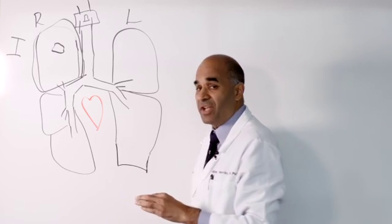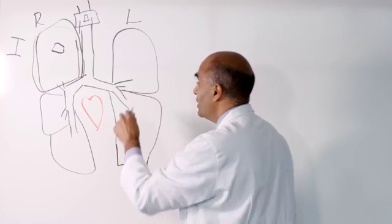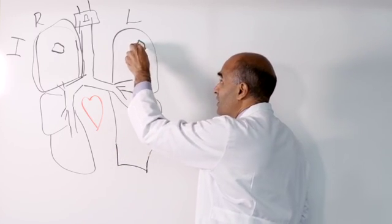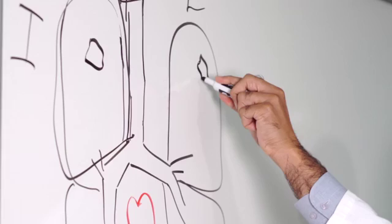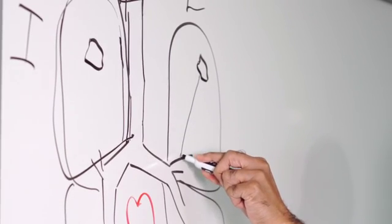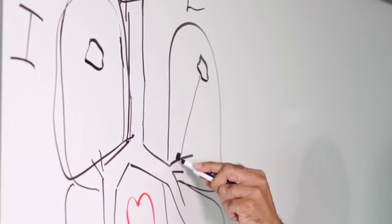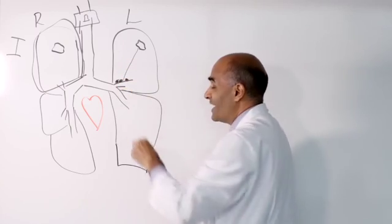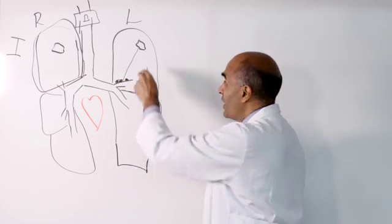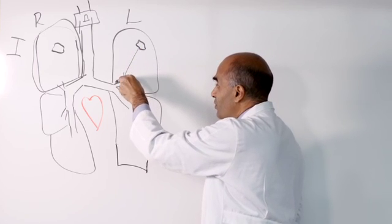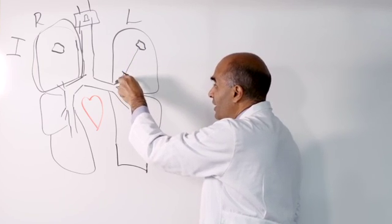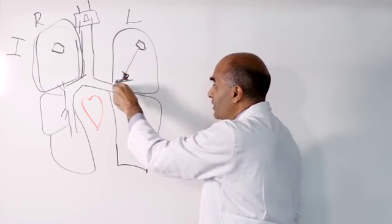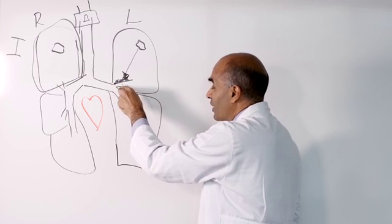Now the next stage of cancer, stage 2, presents as a spot in the lung but there is evidence that the cancer is involving local lymph nodes within the same segment of lung. So you have cancer here with local spread down here to these lymph nodes that line the lower windpipes.